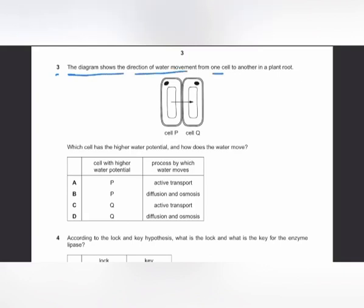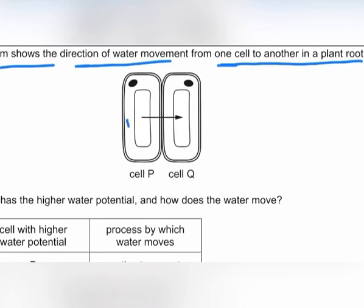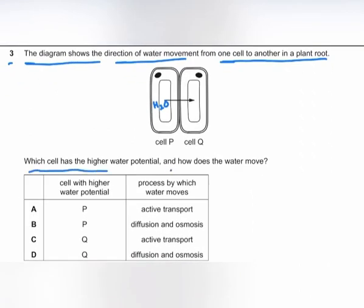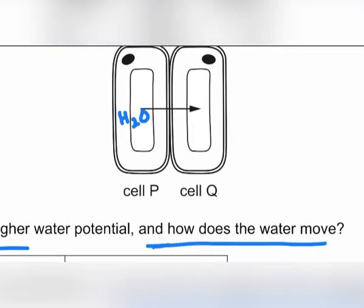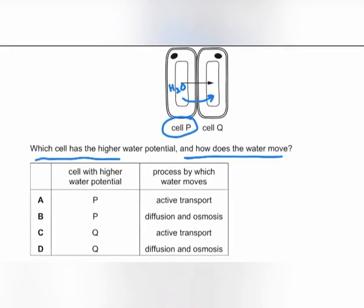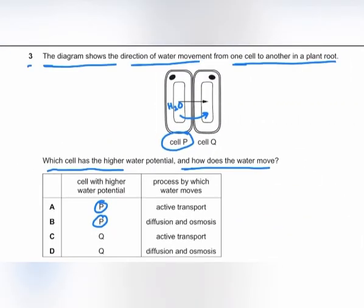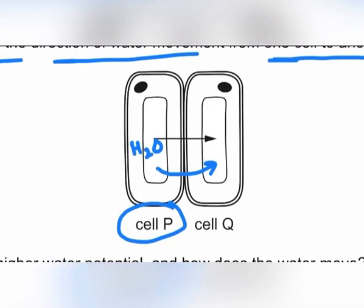MCQ number 3: the diagram shows water movement from cell P to cell Q in a plant root. Because water moves from P to Q, cell P has the higher water potential, since water always flows from higher to lower water potential. As the water crosses cell surface membranes (partially permeable), it moves by osmosis; when crossing the cell wall, it moves by diffusion. The answer is B.